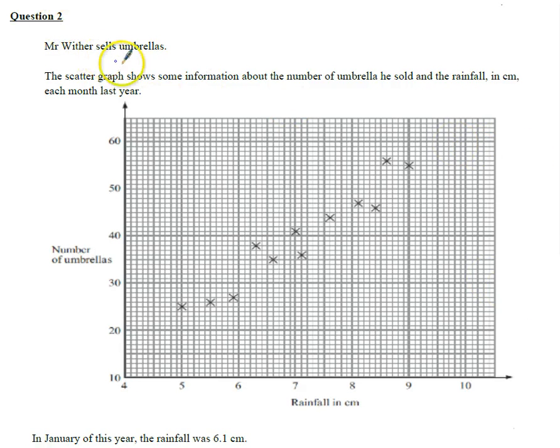Right, question number two, it's obviously a category question. This is about umbrellas and it's the number of umbrellas sold and the amount of rainfall in centimeters. So we've got not a very clear graph but we have got a graph going on here. Let's have a look, what's the question say?